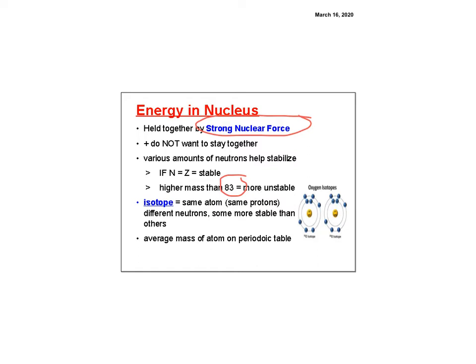An isotope is an atom with the same number of protons — which determines the element's identity — but a different number of neutrons. Some isotopes are more stable than others; you'd need to check a table to find out. The periodic table shows the average atomic mass across all naturally occurring isotopes, not the true mass of a single atom.